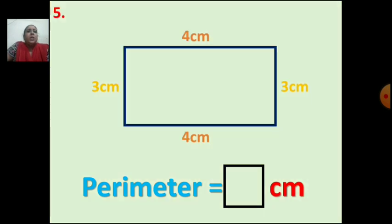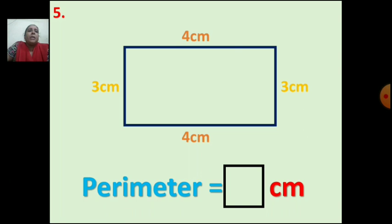Next figure is again a rectangle. The length and breadth are given. You add all 4 sides: 3 plus 4 is 7, 7 plus 3 is 10, and 10 plus 4 is 14. The perimeter of the rectangle is 14 cm. Now you understand how to find the perimeter of different figures — rectangle, triangle, and square.